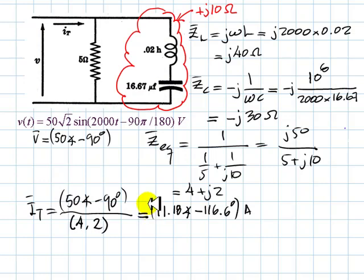We can write that current as a function of time, which is what the exercise is all about, just going from the phasor domain to the time domain. The RMS value is 11.18, multiply that, 11.18, times root 2, you get the peak value of that current.